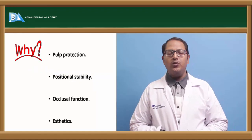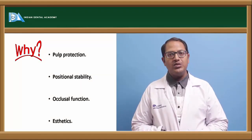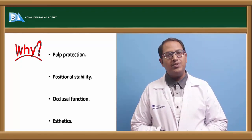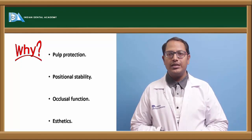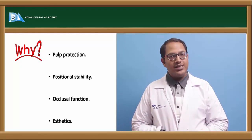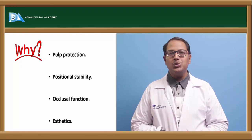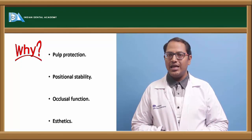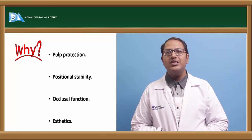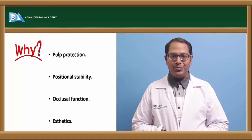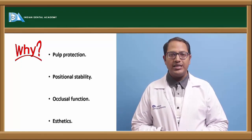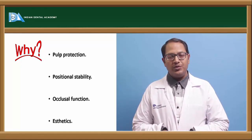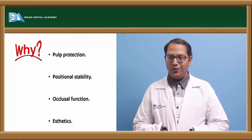Now why is that? Provisional restoration first and foremost helps in pulp protection. How does it help in pulp protection in a vital tooth preparation? When the provisional restoration is placed, it will not allow saliva to percolate inside. So once saliva is not percolating inside, the pulp will be protected. This is how we protect the pulp — by giving a complete layer of acrylic or any other material to prevent the percolation of saliva and other oral fluids.